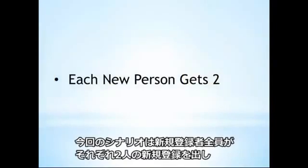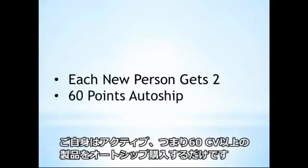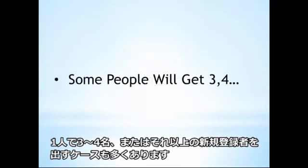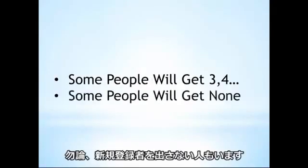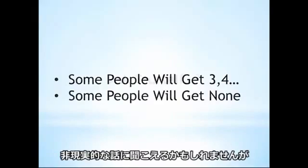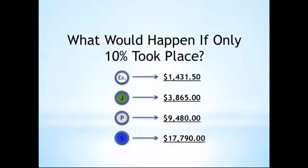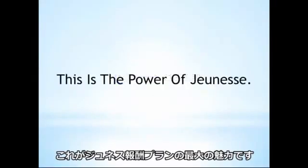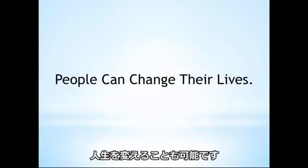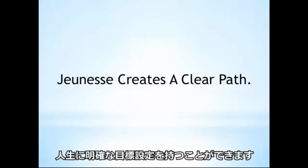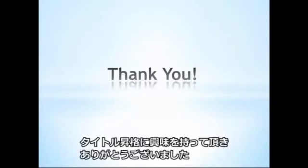Remember, these scenarios are only if each new person gets two people, everyone orders a minimum auto ship of 60 points, and nothing more. There are going to be many people who get three or four or even more, and obviously some who don't get any. But at each of these levels, ask yourself: what would happen if only 10% of the activity outlined in the scenario actually took place? You'd still be doing pretty well. This is the power of the Jeunesse Compensation Plan — it gives people the ability to change their situations and circumstances, and provides a clear path to make progress towards achieving these objectives. Thank you for taking the time to understand the importance of rank advancement in Jeunesse.